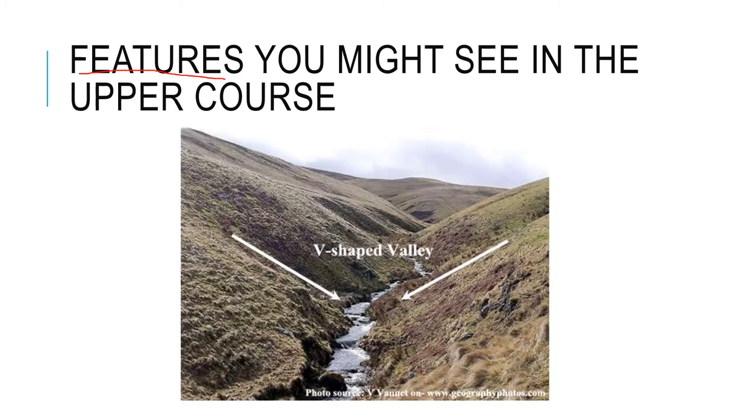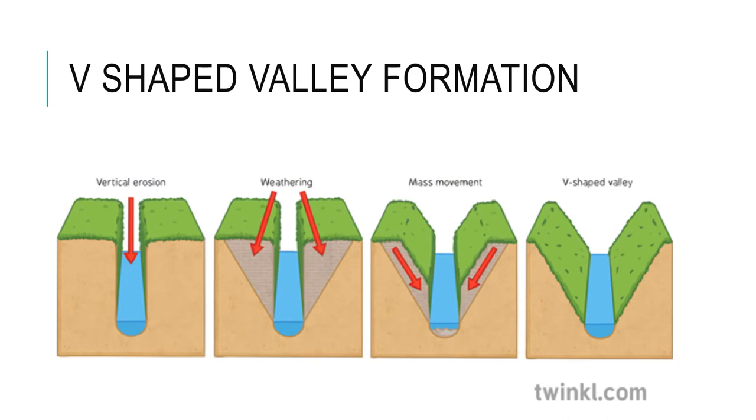So first of all, let's tackle these features of the upper course. What are you likely to see in the upper course? Well, the first thing that you need to be aware of is these v-shaped valleys. No prizes for guessing why they are called v-shaped valleys - they are shaped like a V. Why is that? Well, firstly, because the river is small and young and not particularly powerful, it can't erode the sides of its banks but it can erode the bed. It can erode vertically, so it does erode downwards.